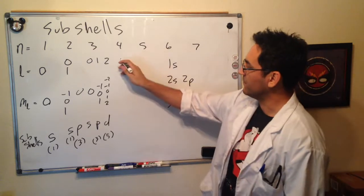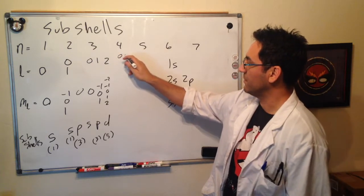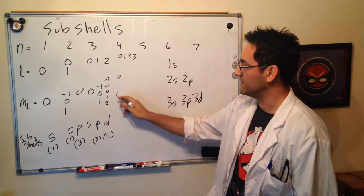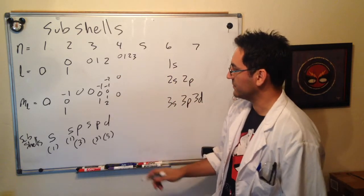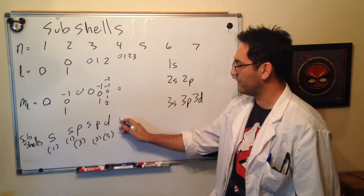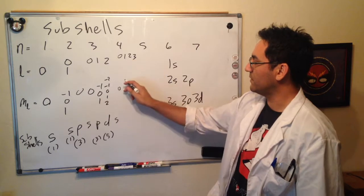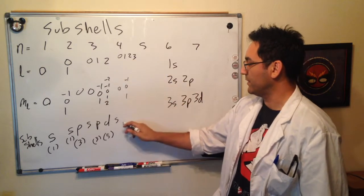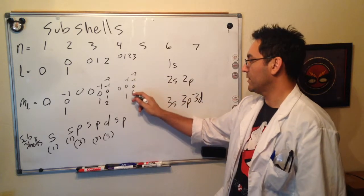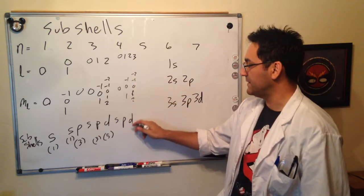All right. What comes next? 4. We can have 0, 1, 2, or 3. 0, 0 gives us, oops. I spaced them out too much. 0, 0 gives us s. 1, minus 1, 0, 1 gives us p. 2, minus 2, minus 1, 0, 2, 1, 2 gives us d.